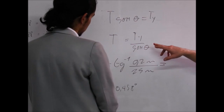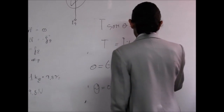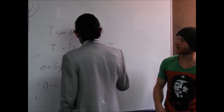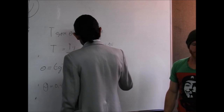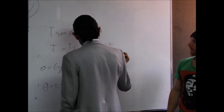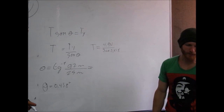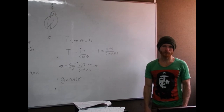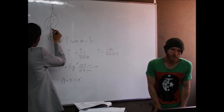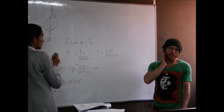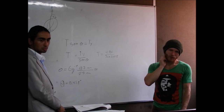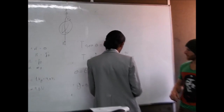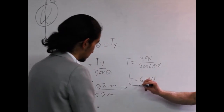T = Ty / sin(θ) = 4.9 N / sin(0.458°) = 613 N. Este es el resultado: la tensión en el cable es 613 N.